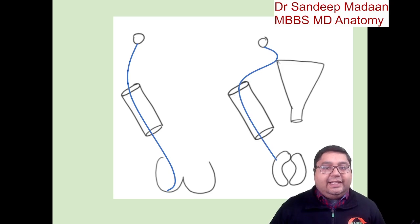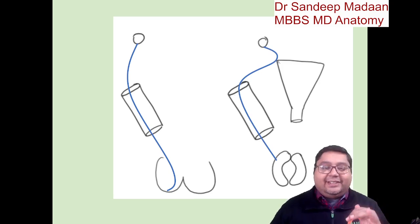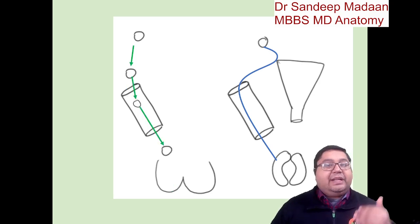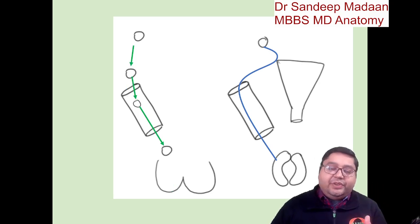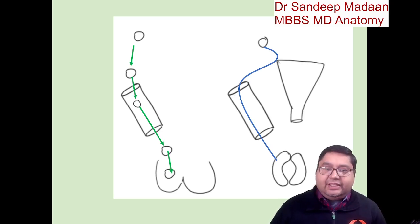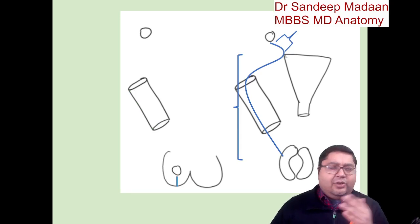In case of male, the testes will descend. It will travel on its pathway — it will pass via the deep ring, inguinal canal, superficial ring, and then finally it will reach the scrotal sac. Once the descent of the testes has taken place, the gubernaculum in males is almost insignificant — you can say it is kind of lost.